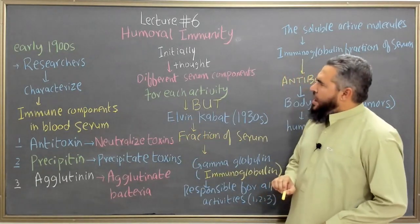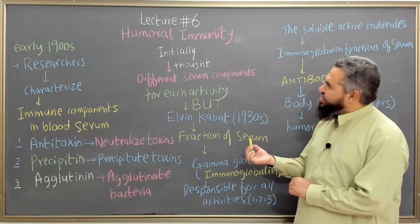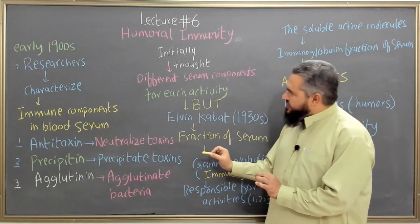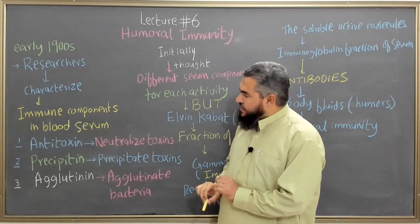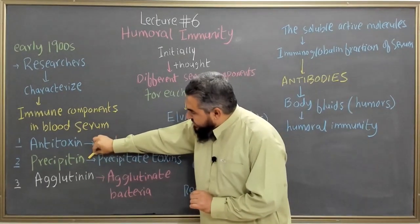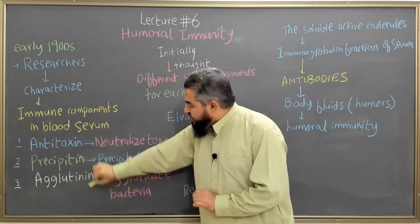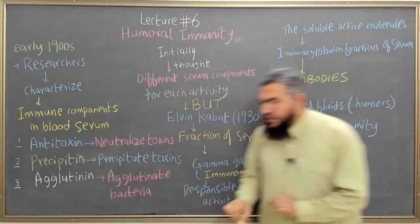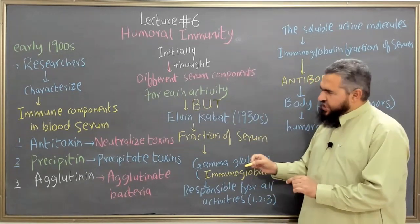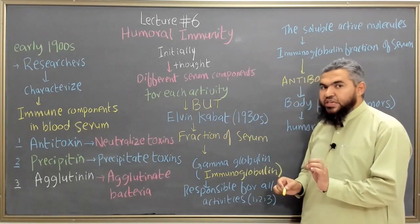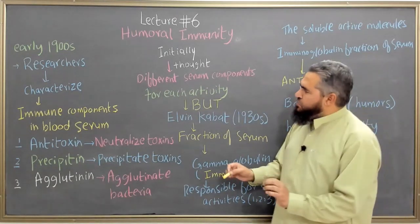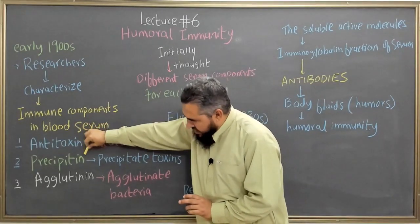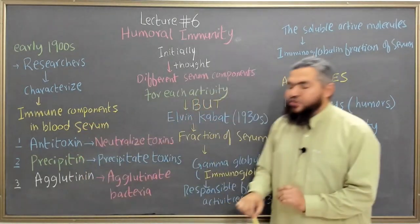So they had these three things: antitoxins, precipitins, and agglutinins. Initially it was thought that different serum components are responsible for these three activities. By that I mean they believed that for antitoxin you need a different component in the blood serum, the precipitin component is different from the antitoxin, and the component responsible for agglutination was different from both the antitoxin and the precipitin. So simply, there would be three types of components in the blood serum.